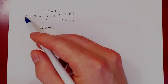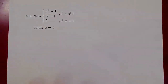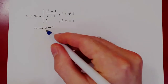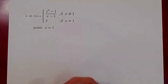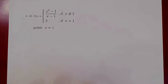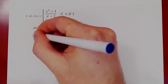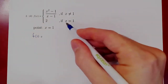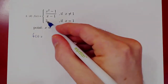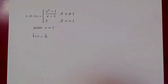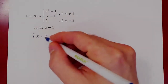This is problem 2D on the problem sheet on continuity. The question is: is the function f(x) continuous at the point x equals 1? As always, the first step is to see whether or not f is defined at the given value of x. So what is f(1) equal to? Well, when x is 1, f(x) is simply equal to 2. So far so good — f is defined at 1 and the value is 2.